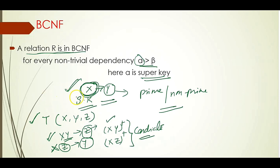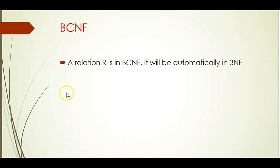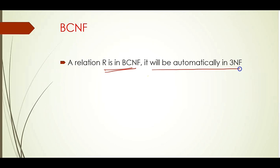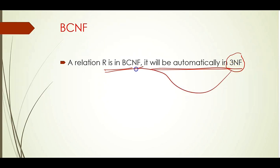This is basically what the Boyce-Codd Normal Form is about. Generally, if a relation R is in BCNF, then it will automatically be in the third normal form. However, there is no guarantee that a relation in the third normal form is also in BCNF. This is the basic understanding of BCNF. Thank you.